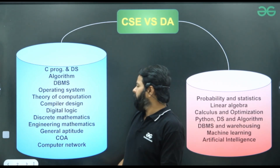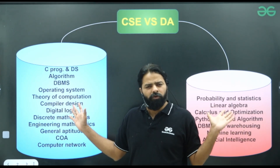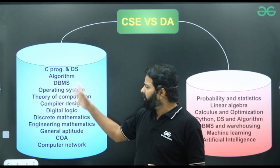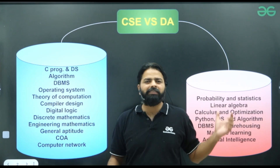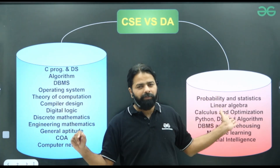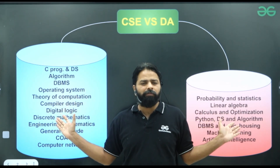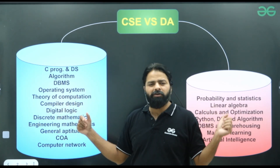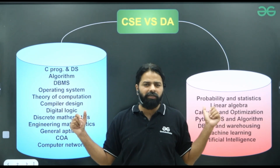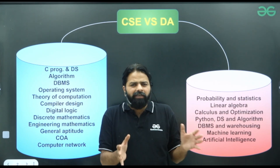General aptitude is common to both. Engineering mathematics has less portion in CS compared to DA. Discrete mathematics is there in CS but not in DA. C programming is not in DA but Python programming is there in DA. Data structures is there in both — using C in CS and using Python in DA. Algorithms are there in both. DBMS is there in both, but data warehousing is additionally in DA. Operating system, computer organization, theory of computation, compiler, and computer networks are in CS but not in DA.